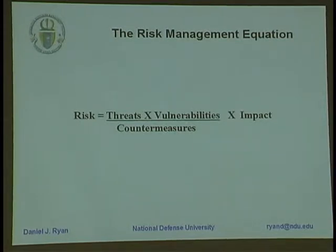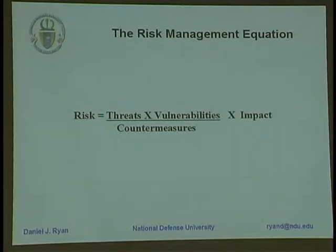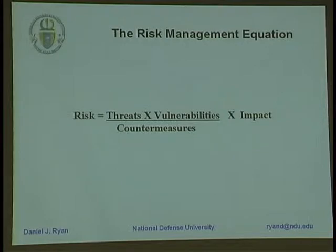If the threat increases, then there's more risk. If you have more vulnerabilities, you have more risk. On the other hand, countermeasures — things that you do to stop threats from being able to exploit vulnerabilities and get to your assets — reduce the amount of risk that you face; they're in the denominator rather than the numerator. And of course it all depends upon the impact: how much you care about the asset and how much damage would be done to your organization and your ability to perform your mission if a successful attack took place.